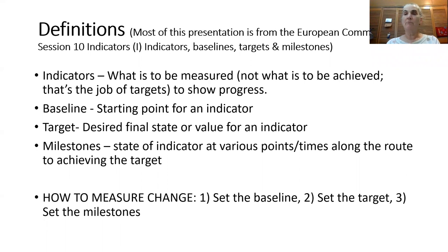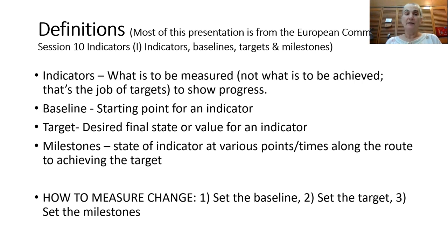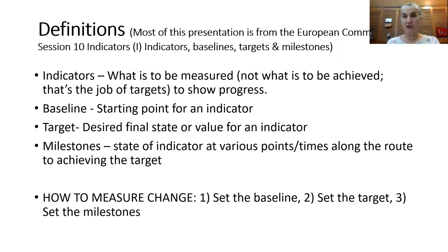For some definitions: most of this presentation is based on a presentation from the European community, and the reference for it is at the end of this unit. Indicators are what will be measured to indicate progress on outputs, outcomes, and impacts. It's not what is to be achieved — that is what a target is. The baseline is the starting point for an indicator, and a target is the desired final state or value that an indicator will achieve. Milestones are various values for indicators set for various points along the route towards achieving the target.